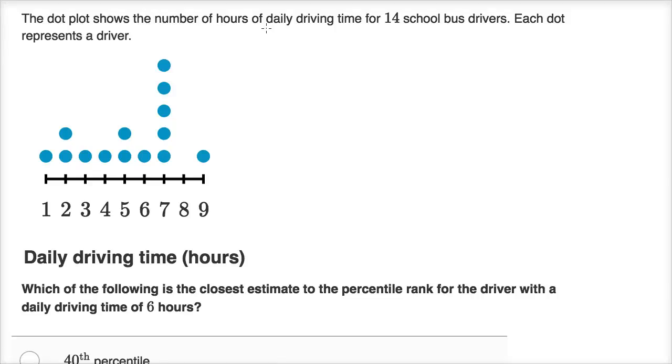The dot plot shows the number of hours of daily driving time for 14 school bus drivers. Each dot represents a driver. So for example, one driver drives one hour a day, two drivers drive two hours a day, one driver drives three hours a day. It looks like there's five drivers that drive seven hours a day.